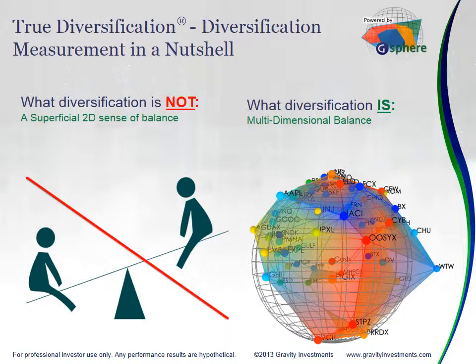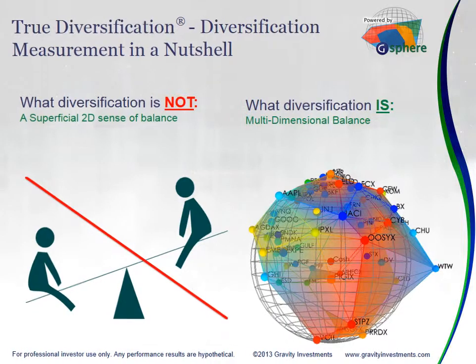The analogy is the teeter-totter, where that focal point is the balancing point. Just like a broken clock is right two times a day, any portfolio can be in balance under the right conditions. What we want to do is move to a multi-dimensional balance that's going to protect that portfolio and ensure that it stays in balance through a more robust set of circumstances and conditions.